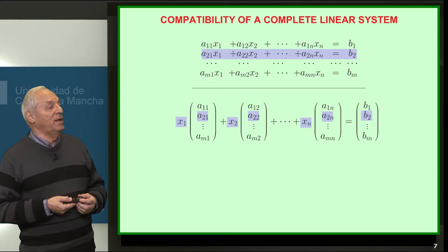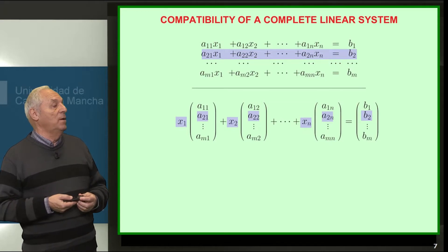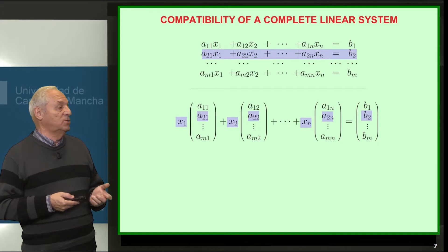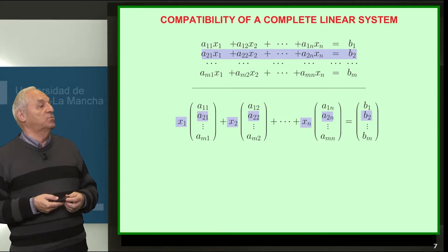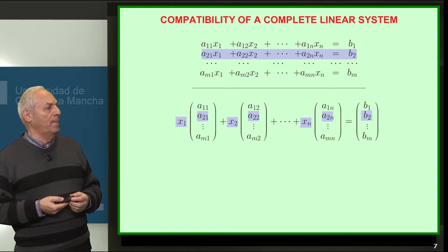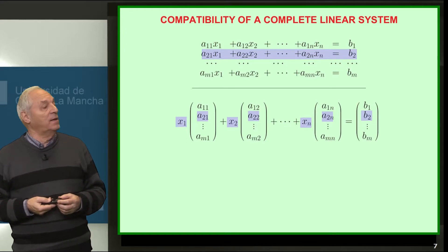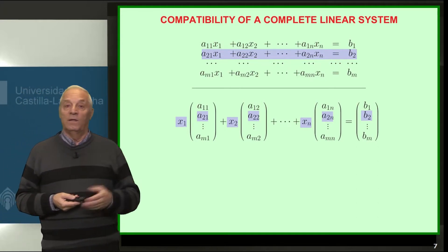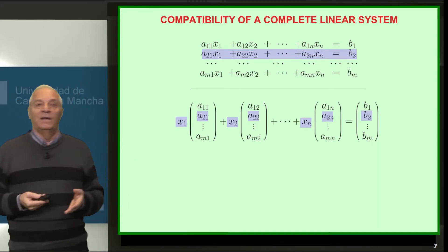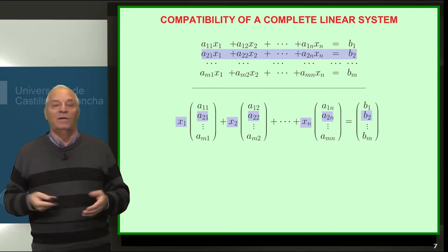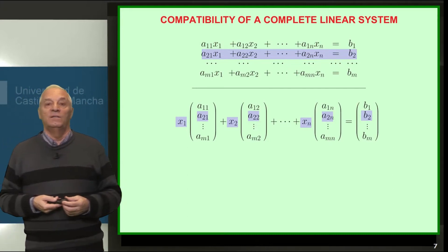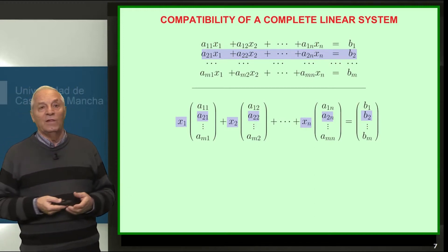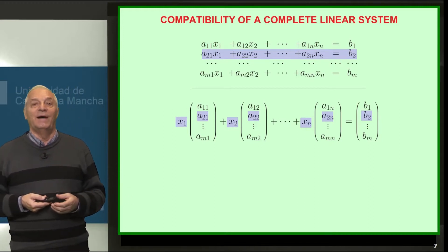If we consider the second component of the equation below, it would be a2-1 times x1, plus a2-2 times x2, plus a2-n times xn, which is just the second equation, equal to b2. The same holds for the last component. So the traditional way of expressing a system and this new form are exactly the same system.